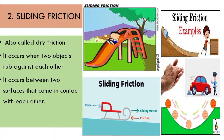Number two, sliding friction. It is also called drive friction. It occurs when two objects rub against each other, between two surfaces that come in contact with each other.